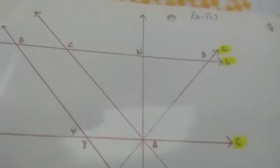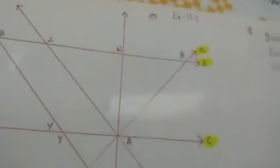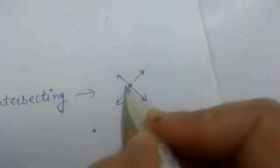Good morning everyone. Today we have to do exercise 11.2. In this exercise we have to cover intersecting lines, parallel lines, perpendicular lines, and concurrent lines. Let's start one by one. Intersecting lines are those lines which intersect at one point — any two lines which will meet at one point. For example, my finger meets with this pen at this point. So any two lines that meet at one point are known as intersecting lines.